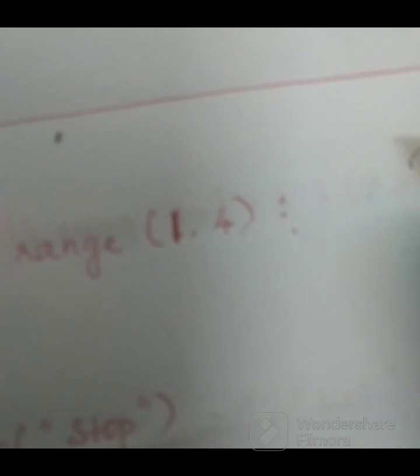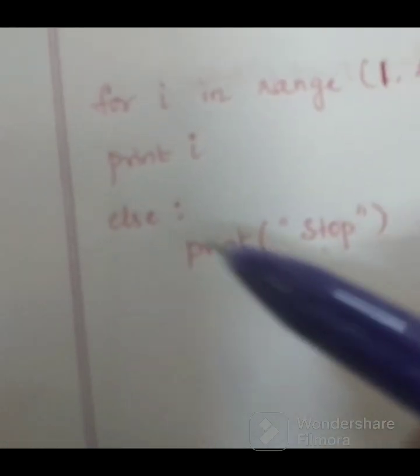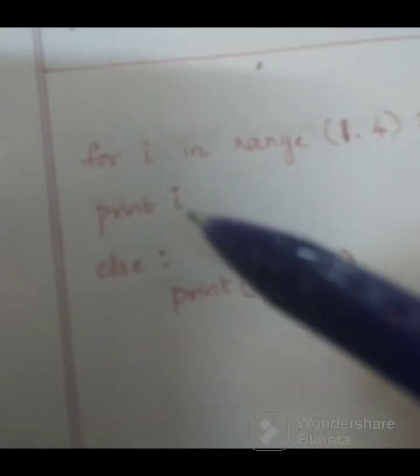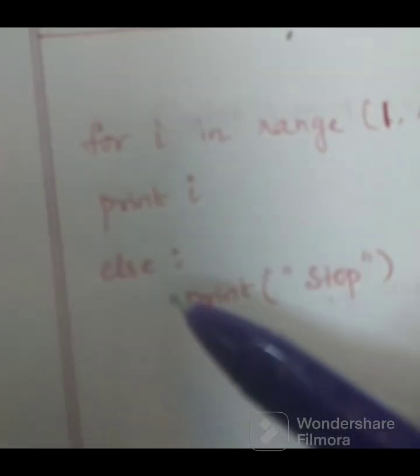So what will be the output? 1, 4, print i, else, colon. So this is for and else use.